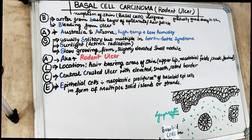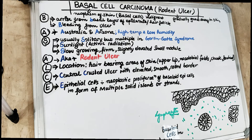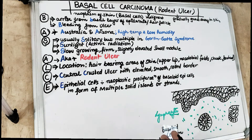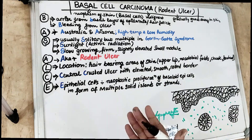Hi, welcome back to the 5 in 5 series where we cover each topic under 5 headings in 5 minutes. Today's topic is Basal Cell Carcinoma, also known as the Rodent Ulcer. Why the Rodent Ulcer? Because it gnaws away in the skin like a rodent.